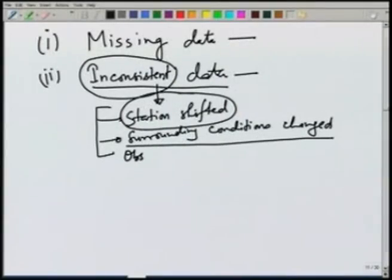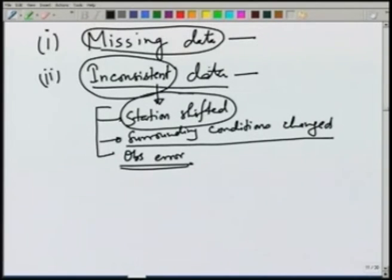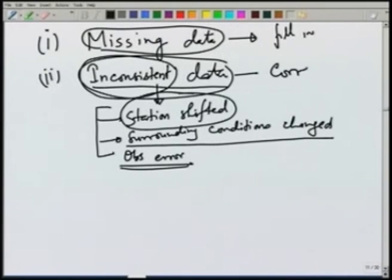All these will cause some inconsistency — the data before that change and after that change will not be consistent. We may have observation errors also. If we have missing data or inconsistent data, we first need to fill in the gap. We need to either fill in the missing data or correct the inconsistent data. There are methods for correcting the inconsistency or filling in the missing data.